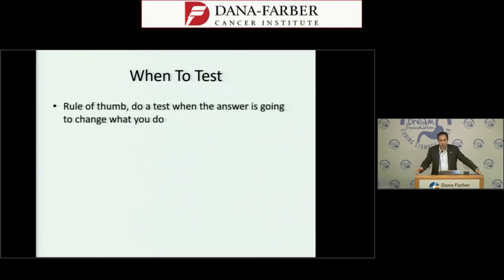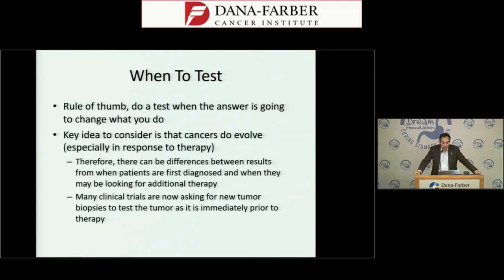When to test is also important. As a general rule, you do a test because you're going to act on the answer — if the result won't change what you do, you shouldn't do the test. When patients are first diagnosed with metastatic cancer, we now test for features like HER2 and MSI because those results guide initial treatment decisions. Testing is also informative when patients are considering clinical trials, helping determine which trial might be most appropriate.